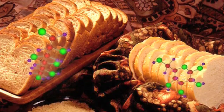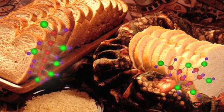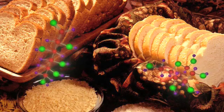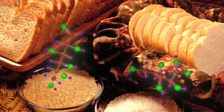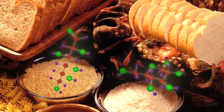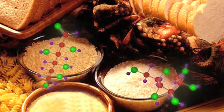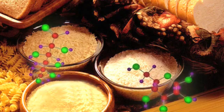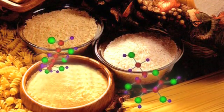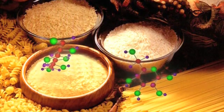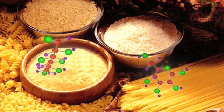Sugars, starches, fibers, grains, and cellulose are carbohydrates. Breads, pastas, brans, potatoes, rice, corn, wheat, cereal, fruit, and vegetables are all primarily carbohydrates.